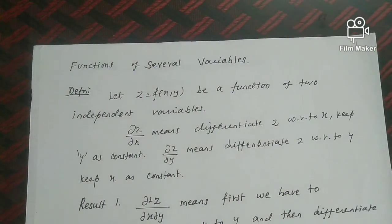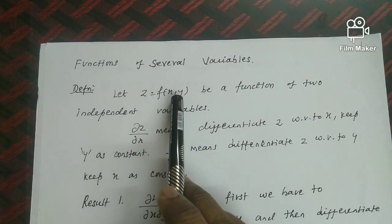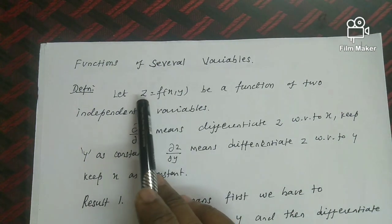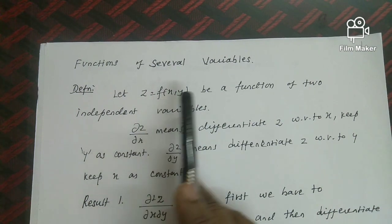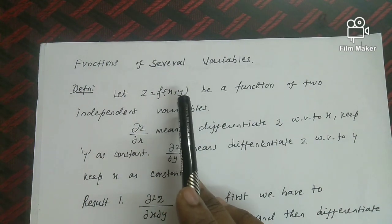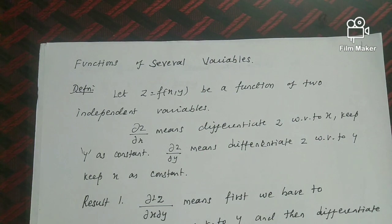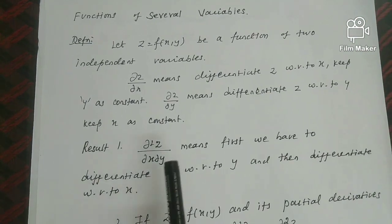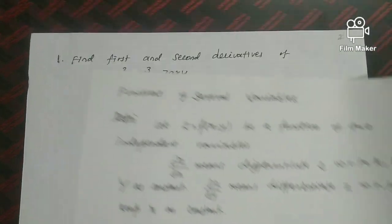For functions of several variables, we first look at partial derivatives. When computing ∂z/∂x, we treat y as constant. When computing ∂z/∂y, we treat x as constant. If the partial derivatives are continuous, the second mixed derivatives are equal: ∂²z/∂x∂y equals ∂²z/∂y∂x.